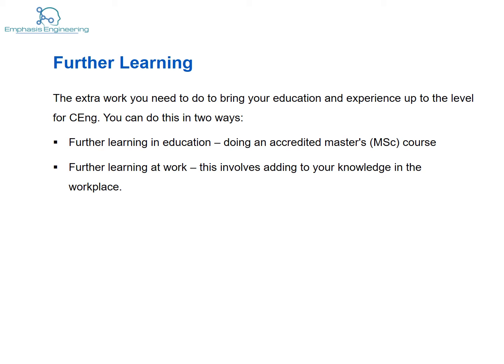Further learning is the extra work you need to do to bring your education and experience up to the level for CEng. You can do this in two ways: further learning in education, which means doing an accredited MSc course; or further learning at work, which involves adding to your knowledge in the workplace. You can do this with support from your employer or ask if they offer an employer-managed further learning program. If your employer doesn't have one, you can do it independently and the ICE will track your progress.